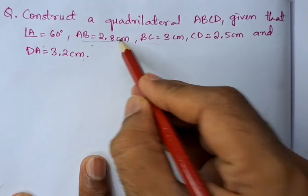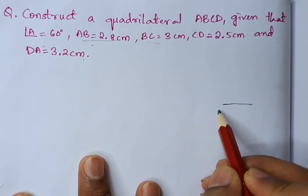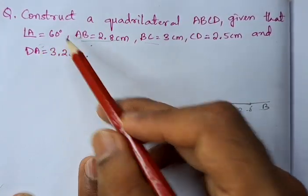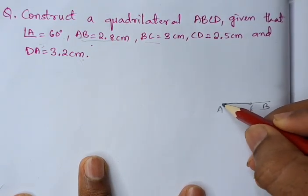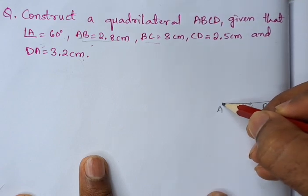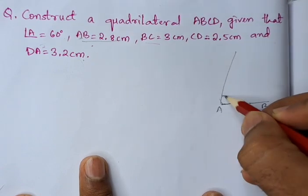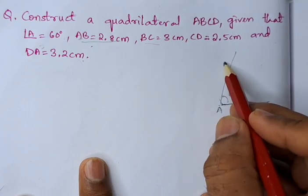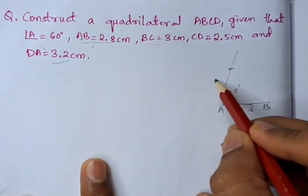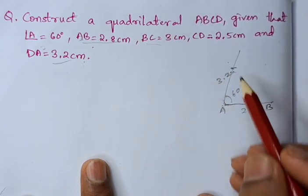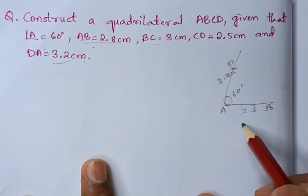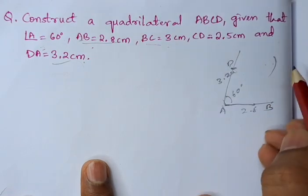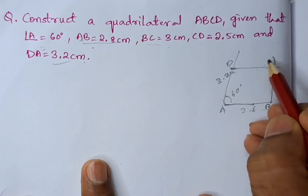In the rough diagram, we will start from AB, so AB is 2.8 centimeters. Next, from A, angle 60 degrees is there, so from A we have to draw an angle of 60 degrees. Then DA is 3.2 centimeters, which will come here. Next, DC is 2.5 centimeters, so from D we can draw an arc, and from B to C that is 3 centimeters we will get an arc. Then finally we will join to get point C.